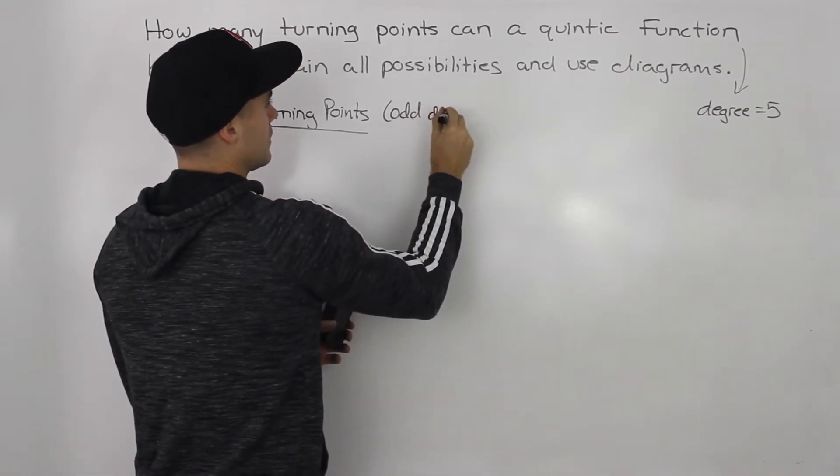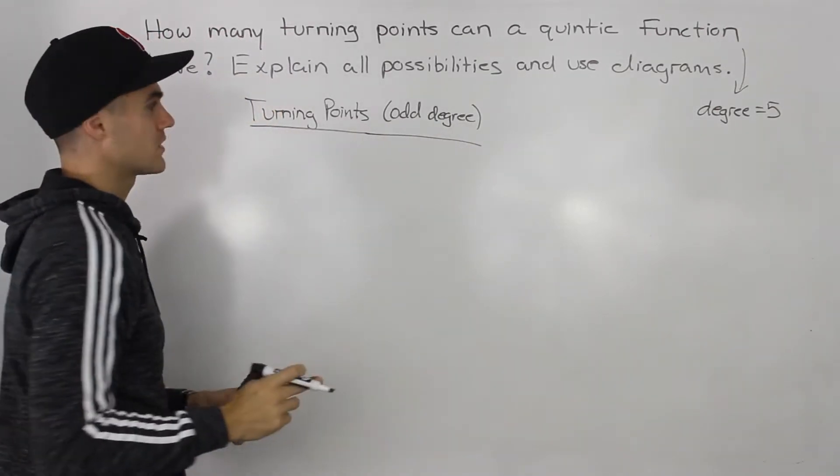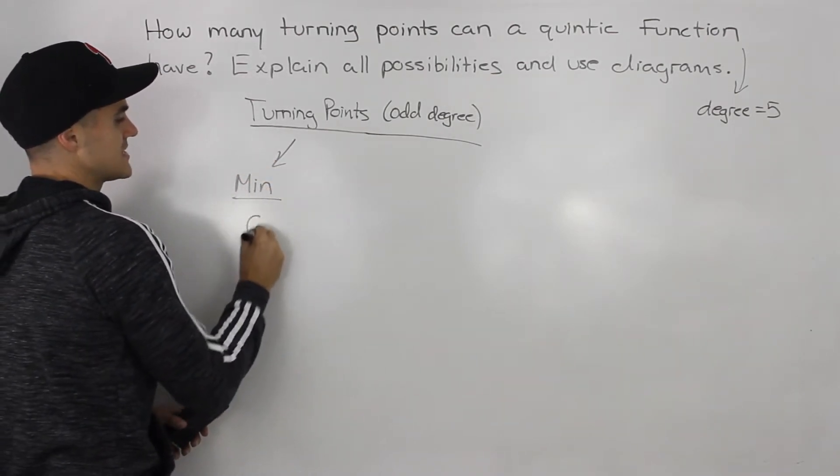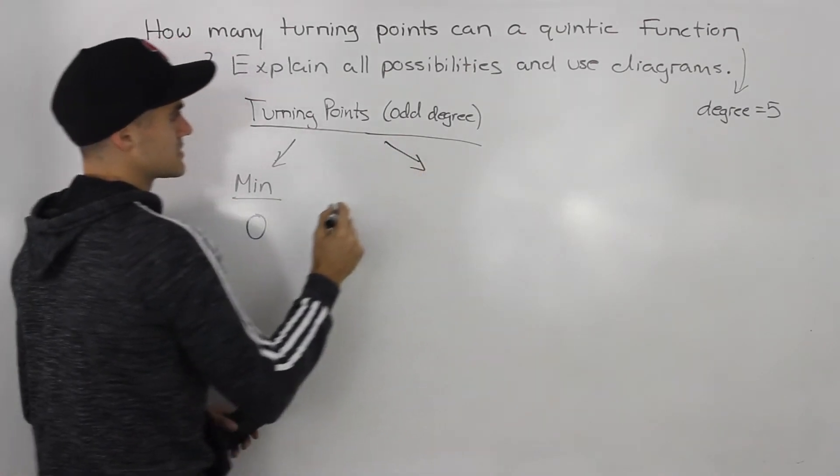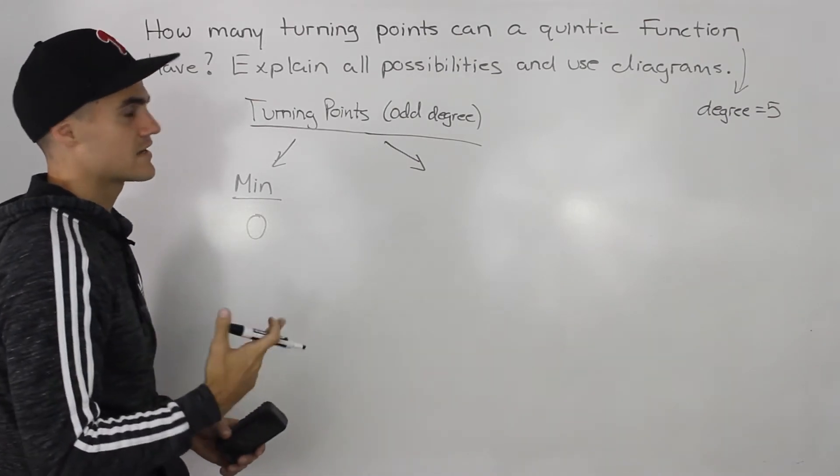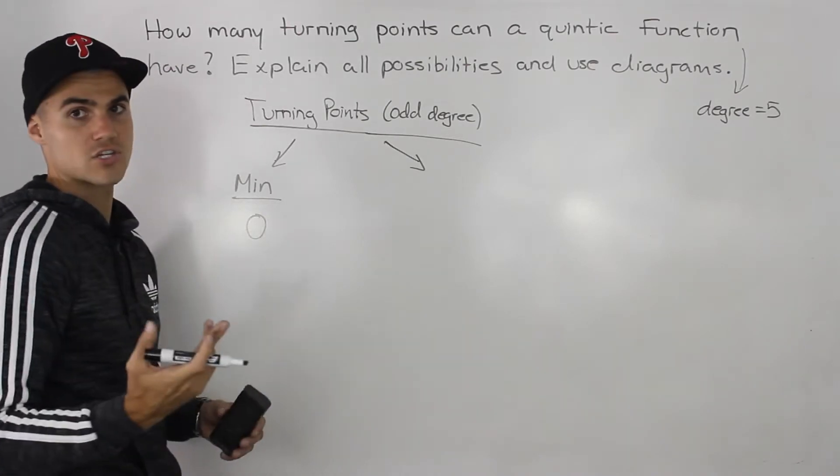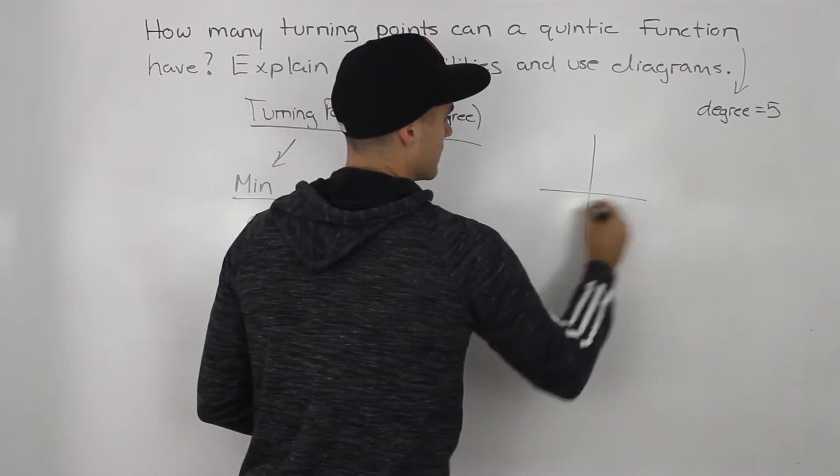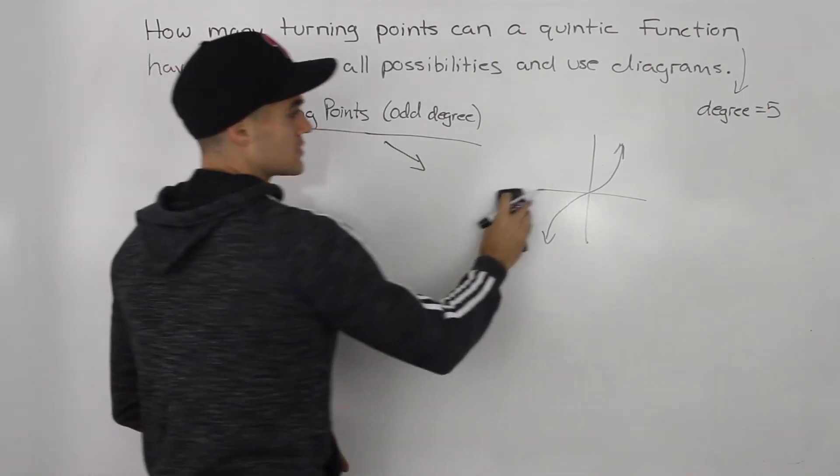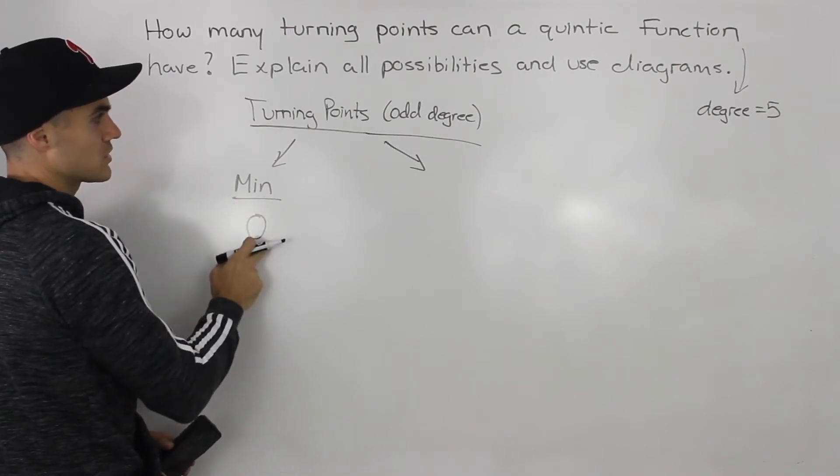Let's review what happens with turning points when you have an odd degree function. The minimum number of turning points is zero, because an odd degree function doesn't necessarily have to turn. A good example is a line. A line has a degree of one and never has a turning point. Same thing with x cubed - the way it looks is like this. Notice how it doesn't have a turning point. So an odd degree function could have no turning points.